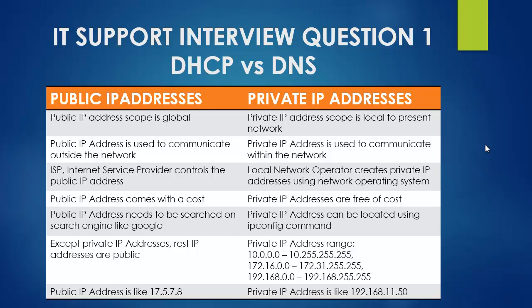The public IP address is used to communicate outside the network. This is crucial — it provides you access outside your network. When you buy services from the ISP, you're actually getting the public IP address to communicate outside your network. Without that public IP address, you can still communicate within your local network, but you cannot communicate outside it.